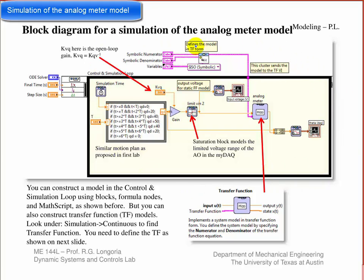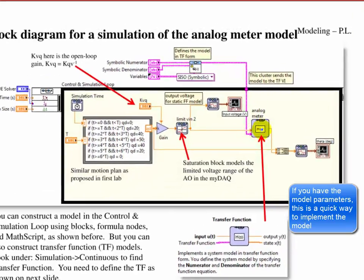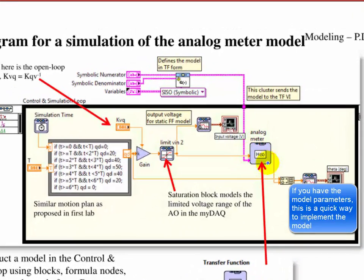Here's a summary slide showing a block diagram for a model for that transfer function. I want to show you how to build models like this using a transfer function form. In Control and Simulation Loop, which is what I'm using here in LabVIEW, we've looked at using blocks and formula nodes to write the equations and math script. But you can also use transfer function models, and that's what this block is right here. I'm going to show you how to use that.